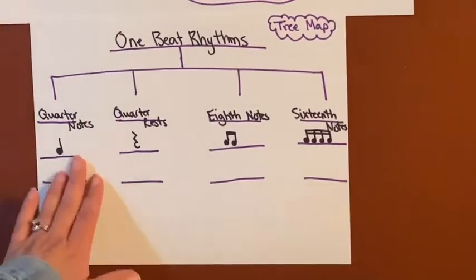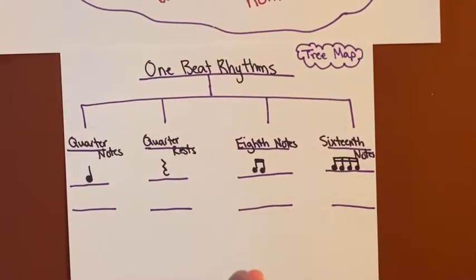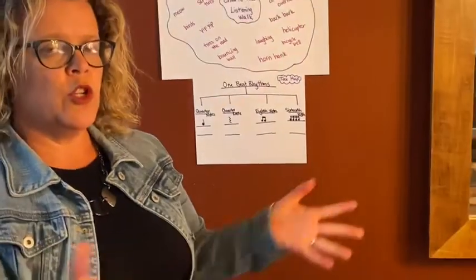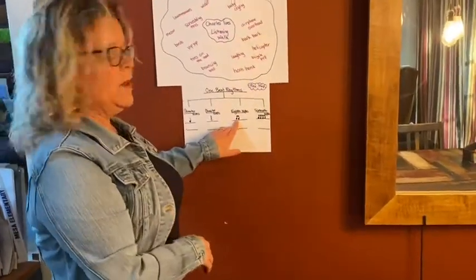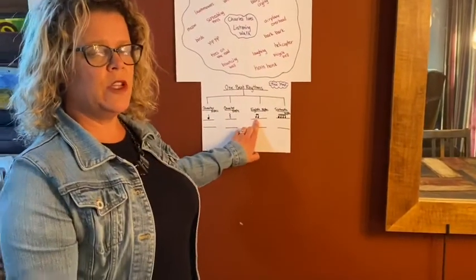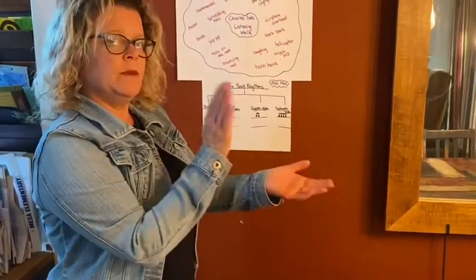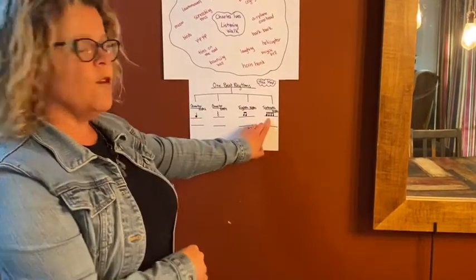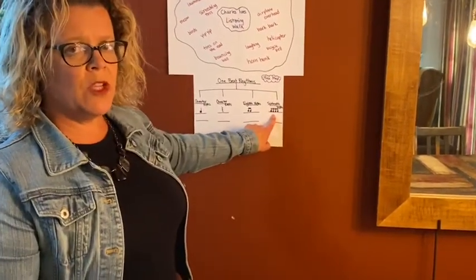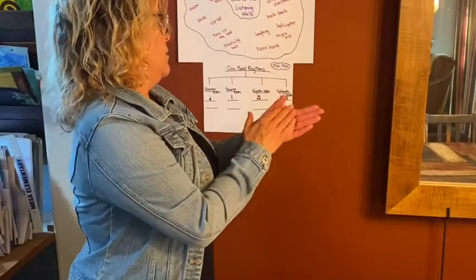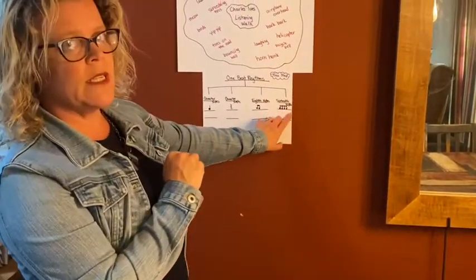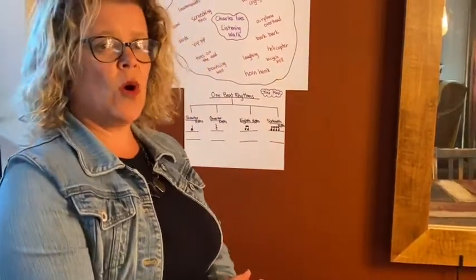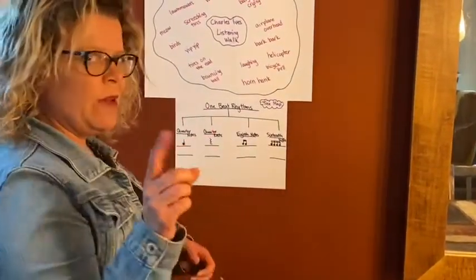If I were to clap a quarter note, it sounds like this. A quarter rest is silent — we say shh. Eighth notes have two circles with two stems, so you hear two sounds; they are twice as fast as the quarter note. Sixteenth notes have four of them, so you hear four sounds — it takes four sixteenth notes to equal one quarter note. We could get into a whole lesson with a pizza pie or a dollar bill and some quarters, but that will be for another lesson.